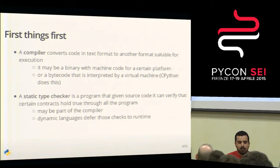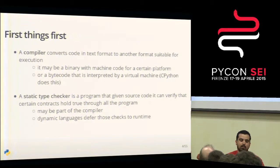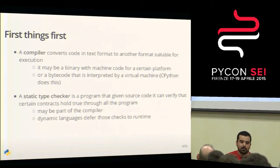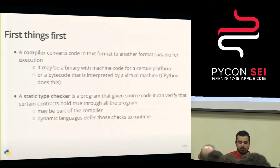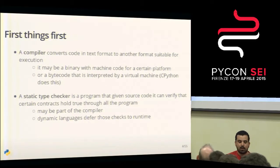And then there is this other component: a static type checker, for statically typed programming languages. That is able to check some properties of the programs that are encoded in the types. Python, as you know, is dynamic, so we don't have this piece. The operations that are legal on a value, on a type, are checked at runtime instead of at compile time.